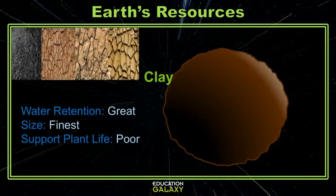Clay is the finest type of soil. Since the particles are so small, they pack together and don't allow for much air or water to penetrate or to escape. Clay feels very sticky and slippery when it's wet and will make a ball and hold its shape when rolled between your fingers. Clay also comes in a wide variety of colors, from dark blackish brown to red and even mustard yellow. Clay isn't very good for plants though, because it's too packed tight for roots to grow, and since it doesn't drain water well, it allows the roots to rot.